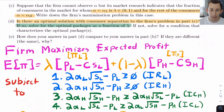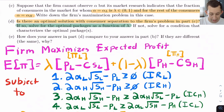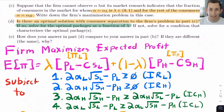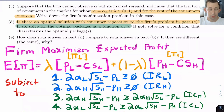What we're going to do is write down the firm's expected profit maximization problem. In part D we ask: is there a situation where the firm offers two different packages — one geared towards high types and another towards low types? And in part E we'll compare what happens under full information versus asymmetric information, and look at who's better off and who's worse off.